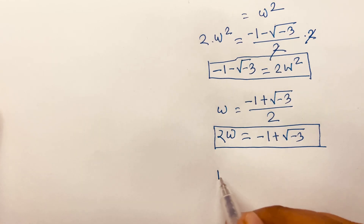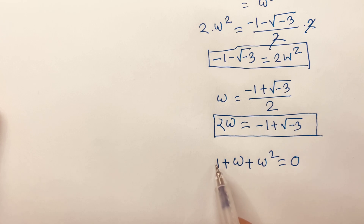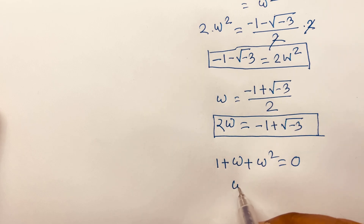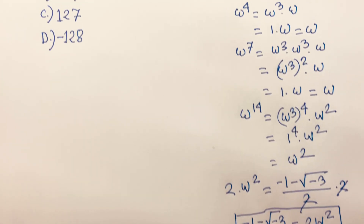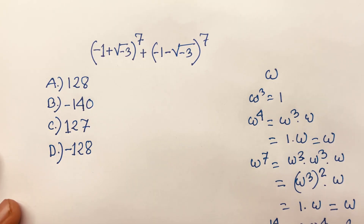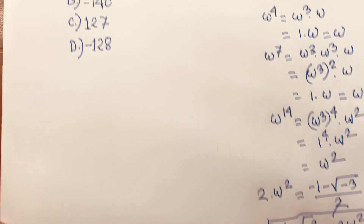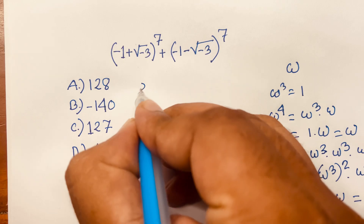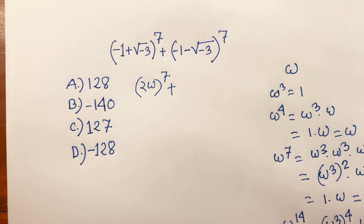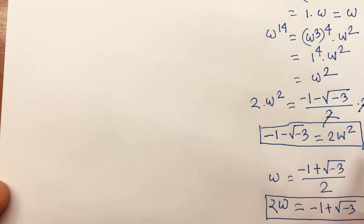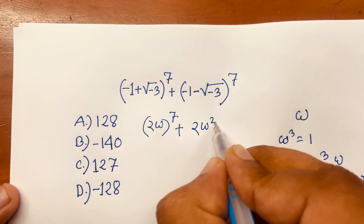We know the rule: 1 + ω + ω² = 0. Moving 1 to the right side, ω + ω² = -1. Now, applying this to our question: -1 + √(-3) = 2ω, so the first term becomes (2ω)^7. And -1 - √(-3) = 2ω², so the second term becomes (2ω²)^7.